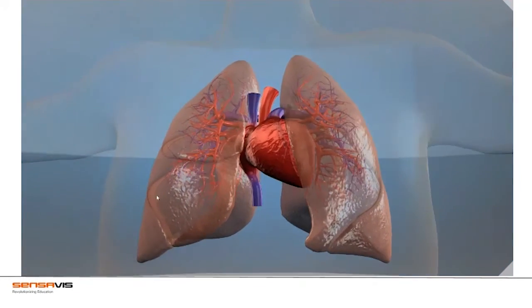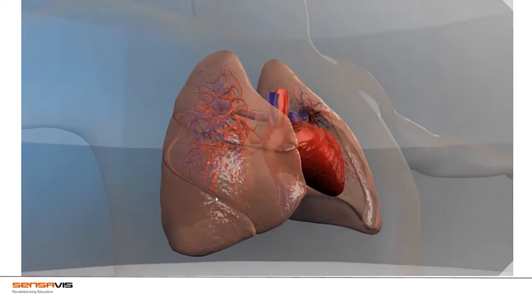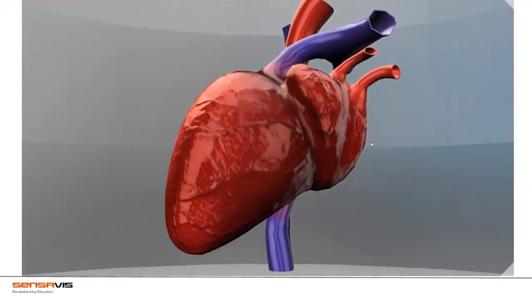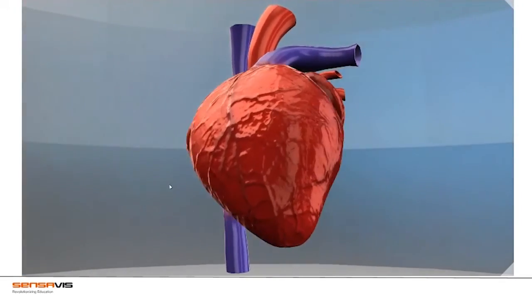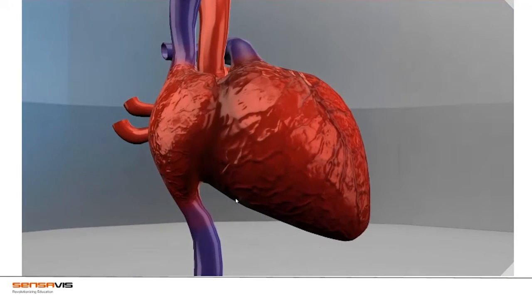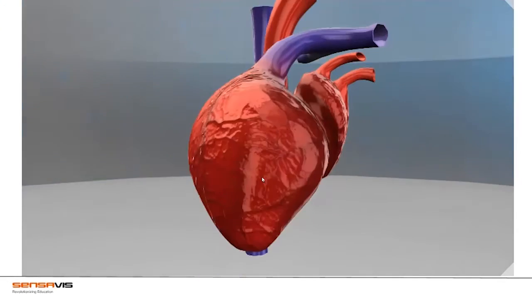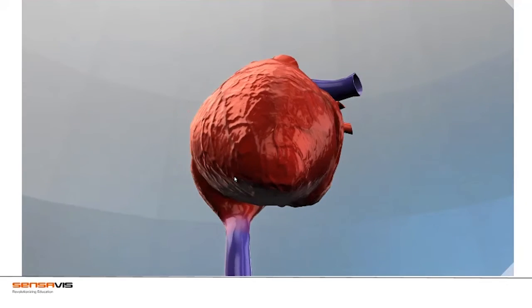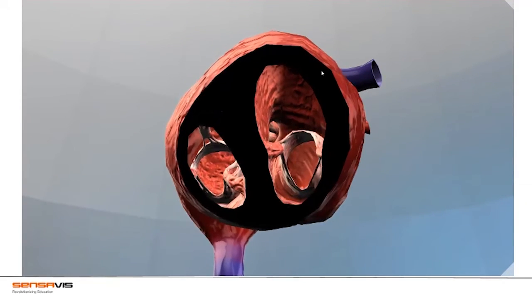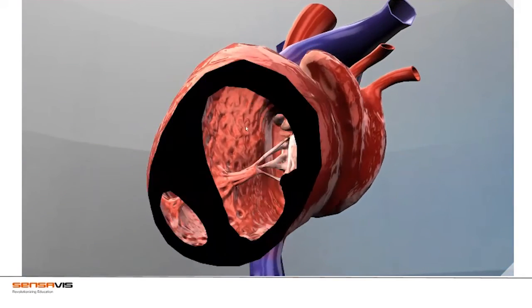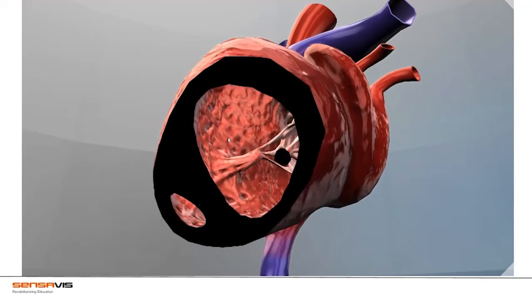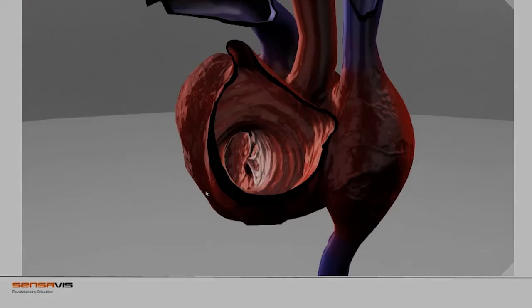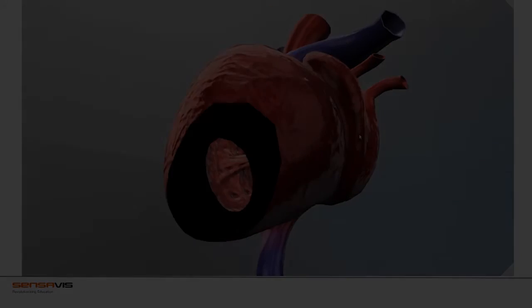The human heart is the pump that circulates the blood through the lungs to the rest of the body. The heart consists of two pumps: the right pump and the left pump. Each pump is separated by muscles and membranes. Each pump consists of an atrium and a ventricle.